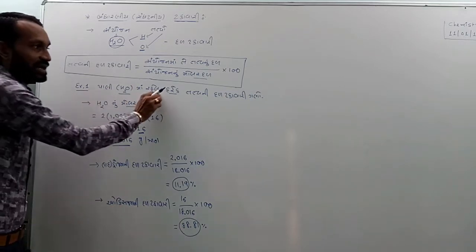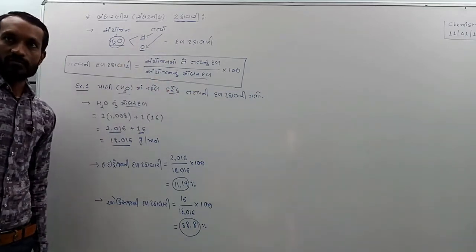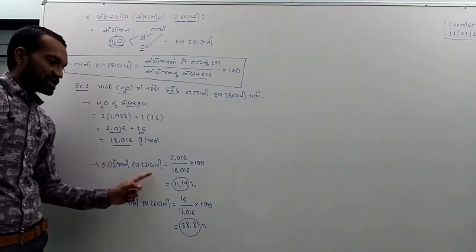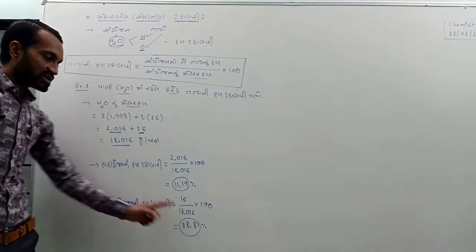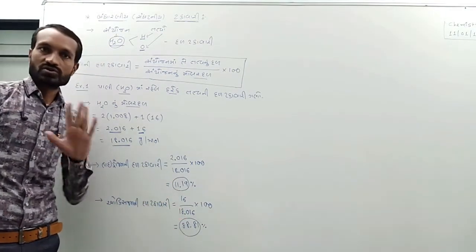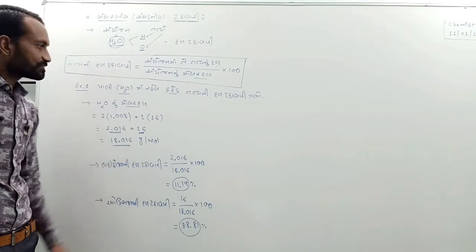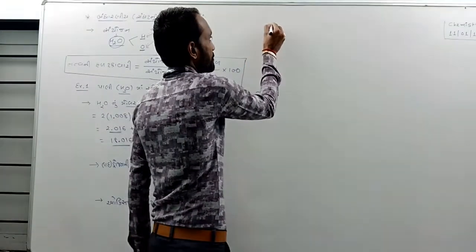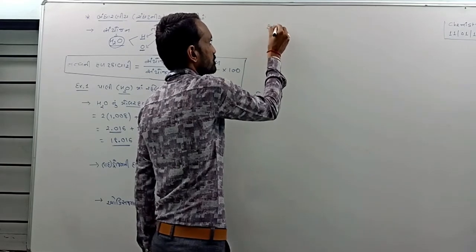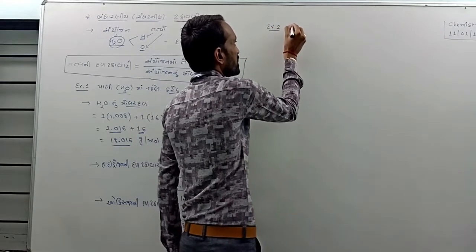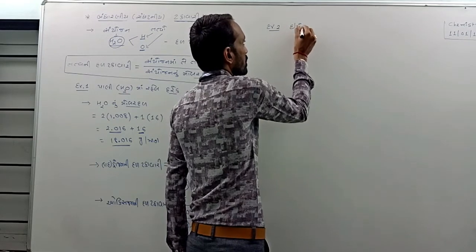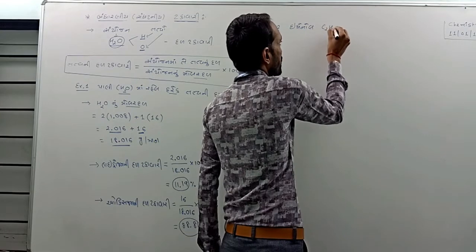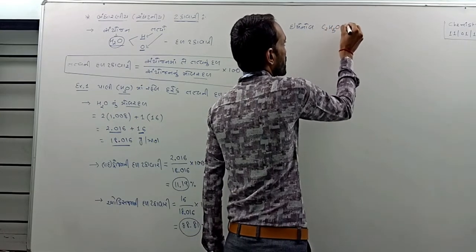If you have 100 grams of water, then you have 1 example. Okay, 1 example. Then you have 1 example. Ethanol: C2H5OH. Now let us know.